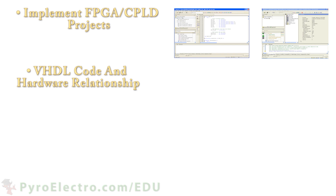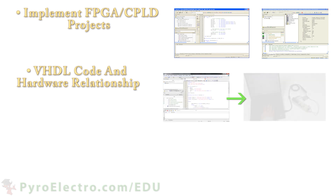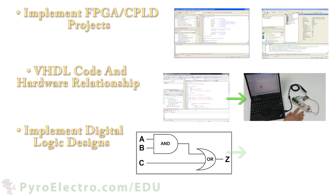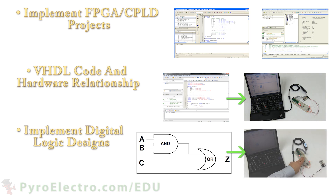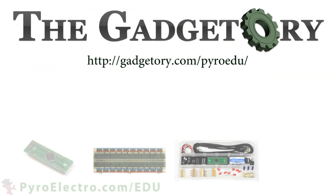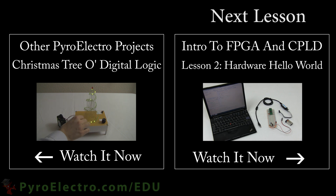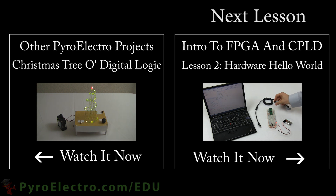The three main outcomes we hope this course provides are: first, that everyone is able to implement a CPLD project from beginning to end; second, that each student understands the connection between how VHDL code uses hardware inputs to drive hardware outputs; and third, that every student understands that we are not programmers, but hardware designers implementing hardware using code, which is very different from Java, C++, or .NET programming. All parts in this course were provided by the Gadgettory. Visit them at gadgettory.com/pyroedu. Now that you've been introduced to FPGA and CPLD, it's time to take your first step with using a CPLD in what I like to call the hardware hello world. When you're ready, continue on to lesson two.